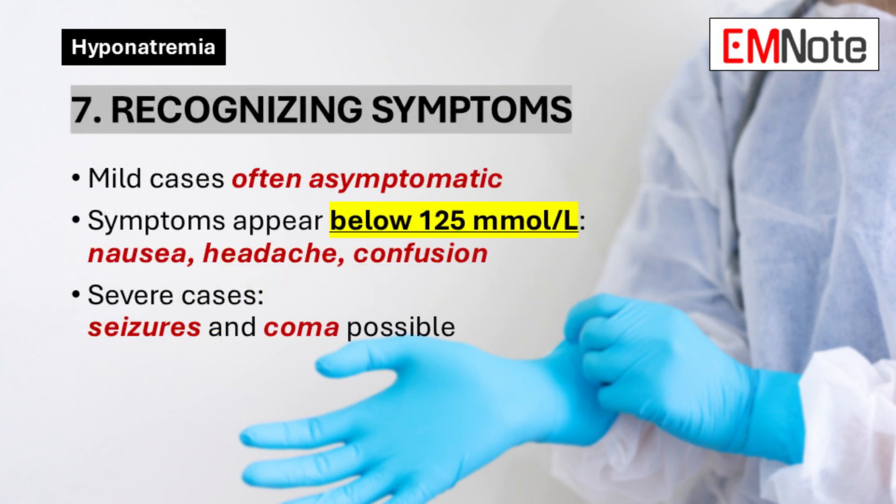Point 7: Recognizing Symptoms of Hyponatremia. While mild hyponatremia may be asymptomatic, symptoms typically emerge when sodium levels fall below 125 millimoles per liter. These include nausea, vomiting, headache, lethargy, confusion, muscle weakness, and in severe cases, seizures and coma. The speed of onset is more important than the absolute level of sodium.